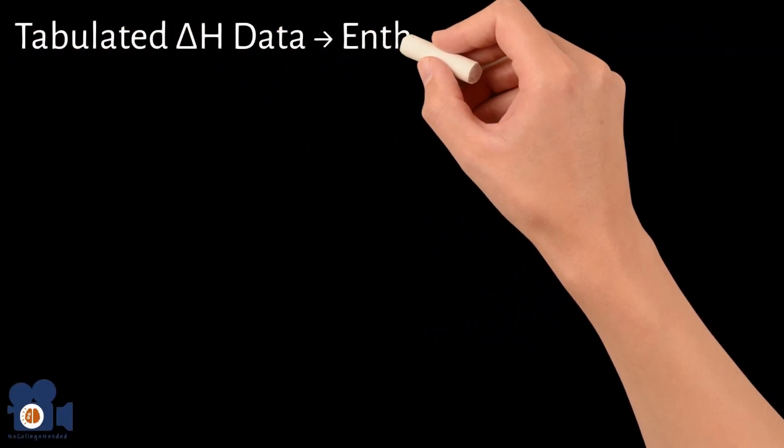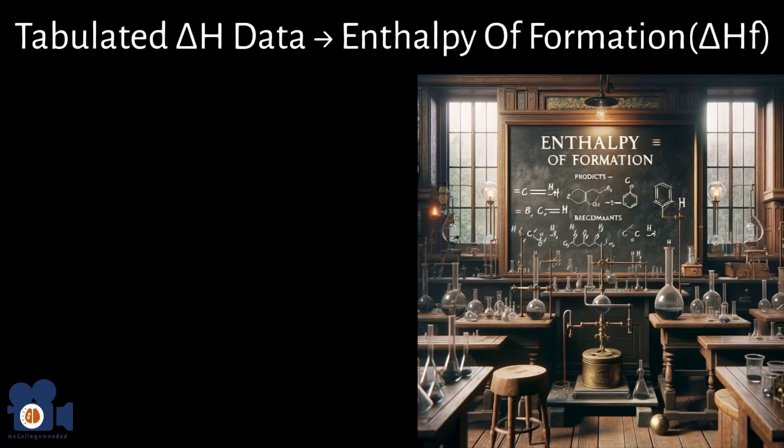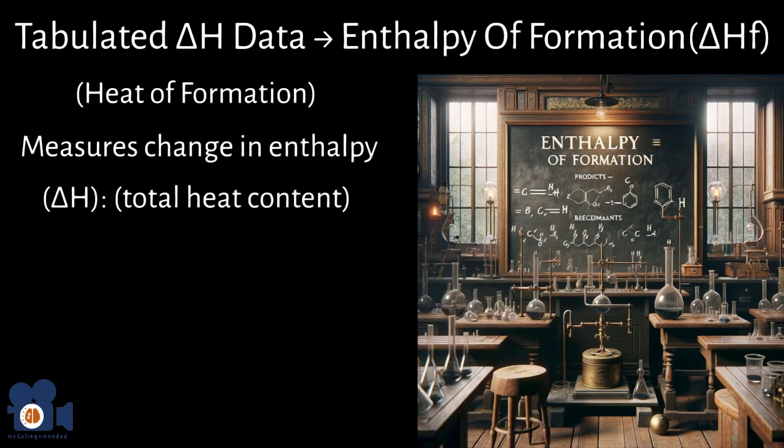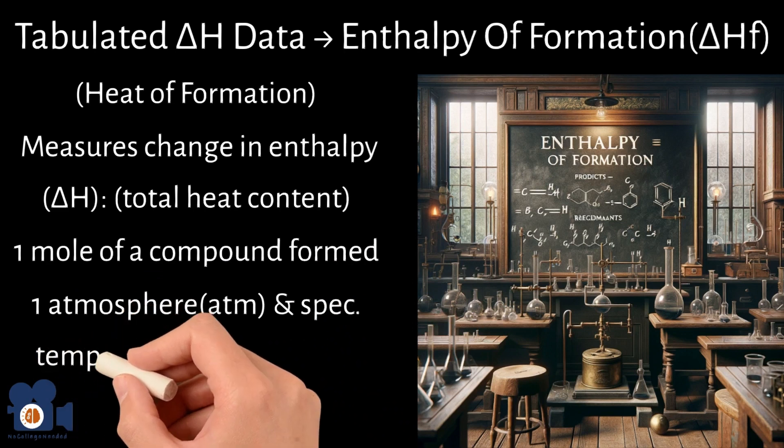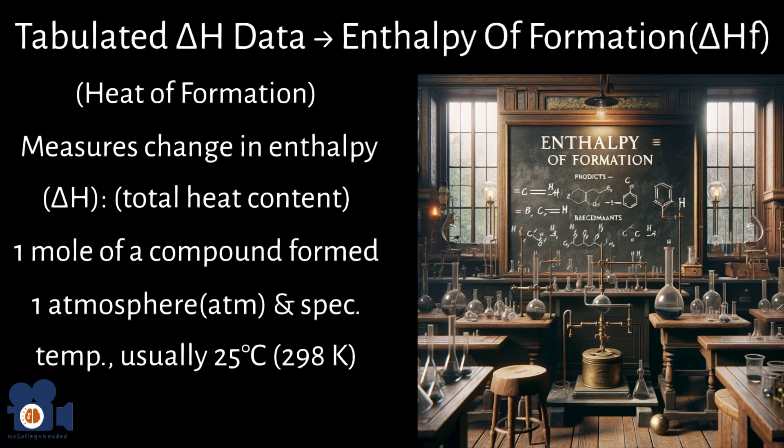The tabulated delta H values also lead to the idea of enthalpy of formation, delta HF, often referred to as heat of formation, and when used in conjunction with Hess's law, this is a powerful tool for scientists. The enthalpy of formation is a thermodynamic quantity that measures the change in enthalpy, total heat content, when one mole of a compound is formed from its constituent elements in their standard states at a pressure of one atmosphere, ATM, and a specific temperature, usually 25 degrees Celsius, 298 Kelvin, where it's most stable.